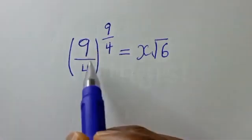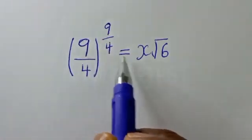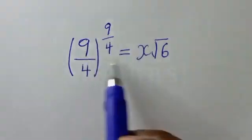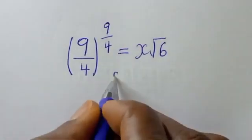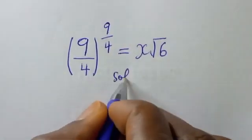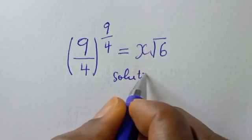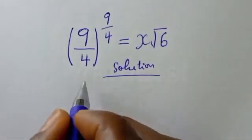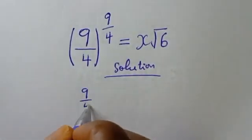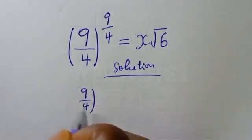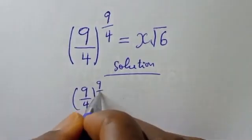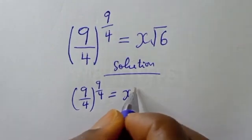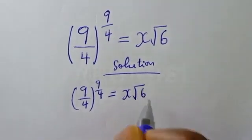9 over 4 to the power of 9 over 4 is equal to s times the square root of 6. Find the value of s from this given equation.